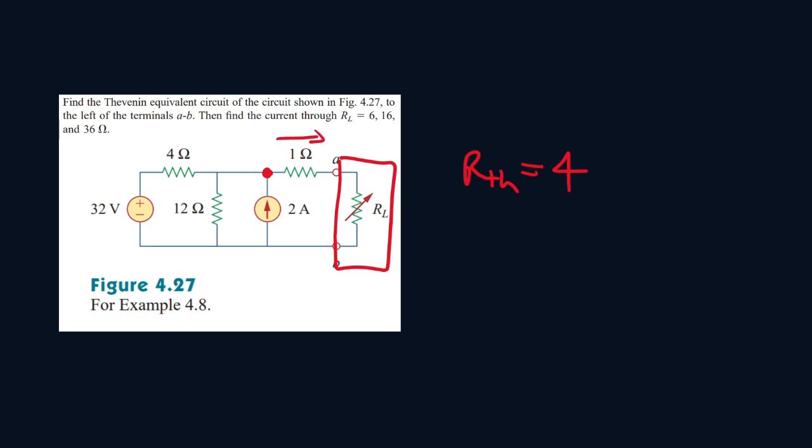So that means the Thévenin voltage will be any point nearest to it. So it will be this portion. Because after that, the current is 0. So this portion also counts as the Thévenin area.